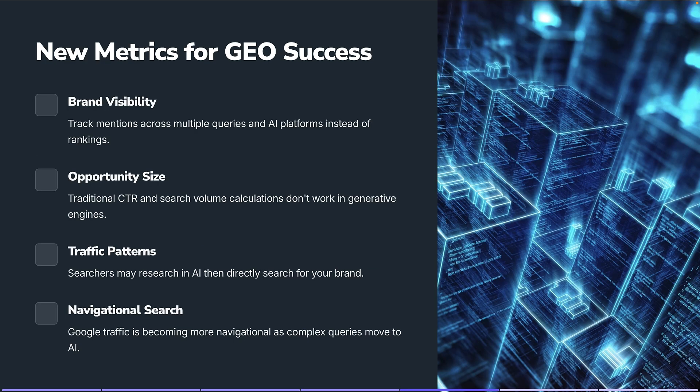So what are the new metrics we need to pay attention to for generative engine optimization success? The first thing is brand visibility — we need to track our mentions across multiple queries and multiple platforms instead of just rankings. Instead of just looking at Google positions one through ten, we need to think about where we're being surfaced on certain questions across Gemini, ChatGPT search, Perplexity, Claude, and AI overviews to give us a better idea of how visible our brand is within the ecosystem.